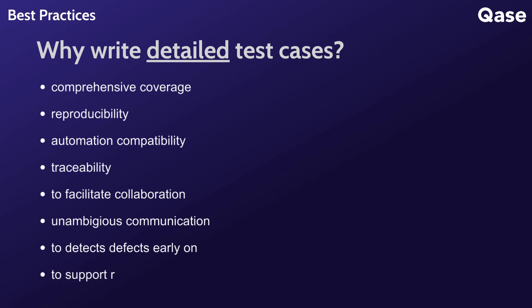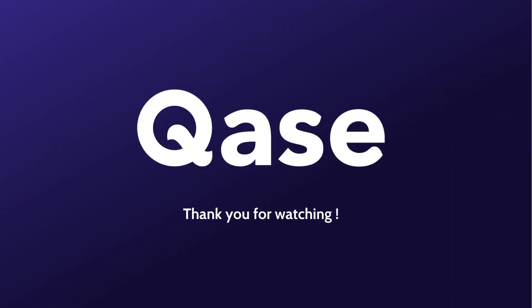Finally, detailed test cases are essential for effective regression testing, ensuring that existing functionalities remain intact after new changes and features have been introduced. Testers can rerun specific test cases to verify that modifications do not negatively impact previously tested aspects of the software. In conclusion, creating detailed test cases is crucial for ensuring the quality, efficiency, and effectiveness of the software testing process. Whether you're a seasoned tester or just starting, adhering to these principles will undoubtedly help elevate your software testing journey.